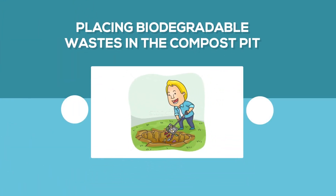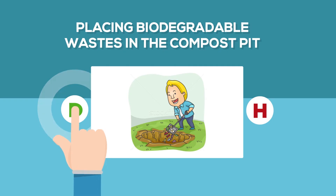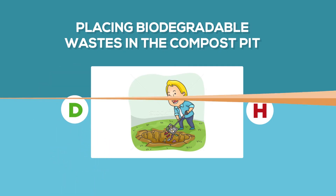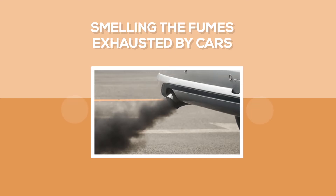Then say your answer after hearing the sound. Let's start! First, placing the biodegradable waste in the compost pit. What is your answer? D is correct! Second, smelling the fumes exhausted by cars. Say your answer! Awesome! It is H! Harmful, so kids, stay away from the fumes. Third, using broken glass to cut paper.